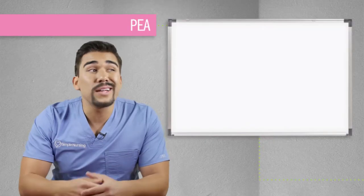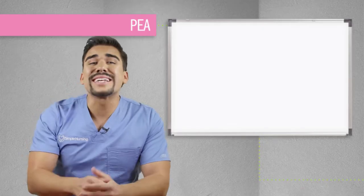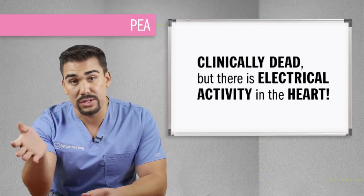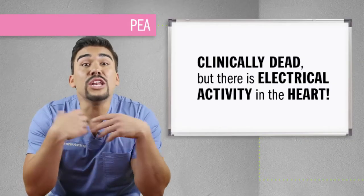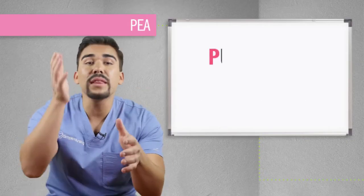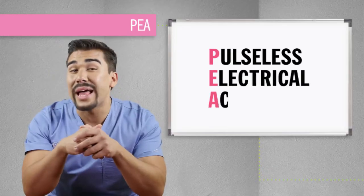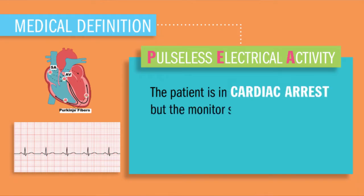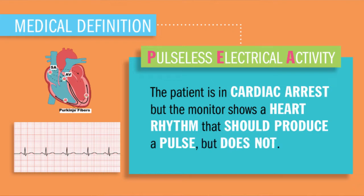PEA — pulseless electrical activity. I call this one the ghost rhythm. The lights are on, but no one's home. The patient is clinically dead, but somehow there's still electrical activity in the heart. There should be a pulse, but there is not — only this pulseless electrical activity. Technically, the fancy medical definition is: the patient is in cardiac arrest, but the monitor shows a heart rhythm that should produce a pulse, but it does not.